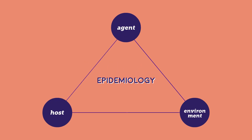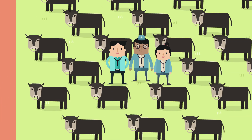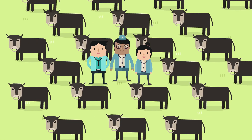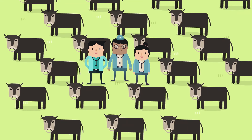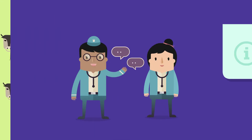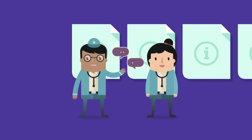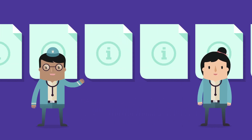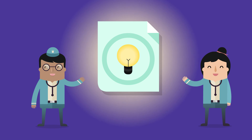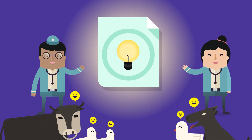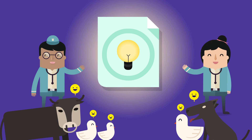Epidemiology recognizes that disease occurs from the interaction among host, agent, and environment — the so-called epidemiologic triad. In summary, epidemiology is the study of diseases and health in populations of humans and animals. Knowing some basic epidemiology principles helps all veterinarians do a better job diagnosing, treating, preventing, and controlling diseases.